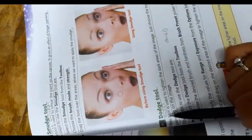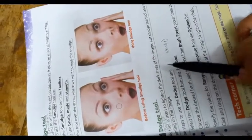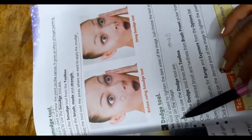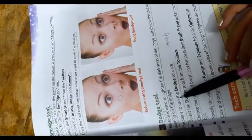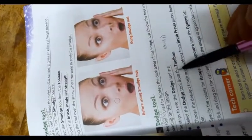Next, dodge tool. The dodge tool is used to lighten the dark areas of the image. Just choose the tool and start painting on the image.